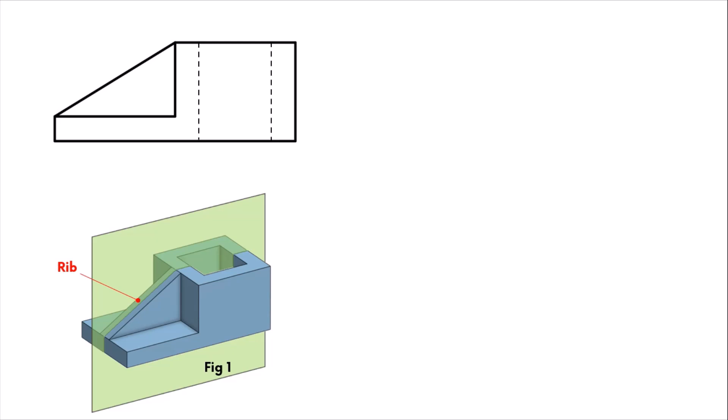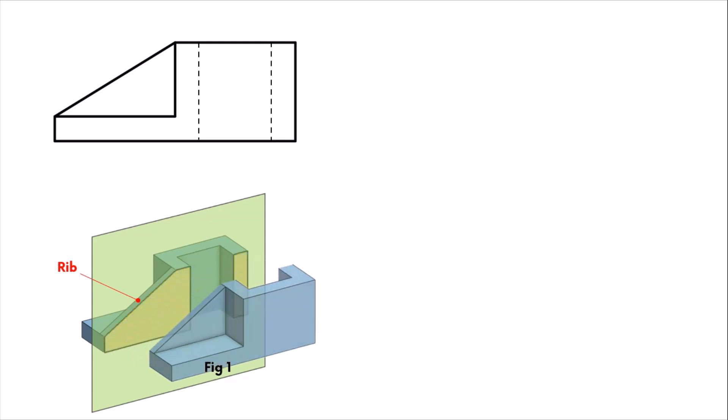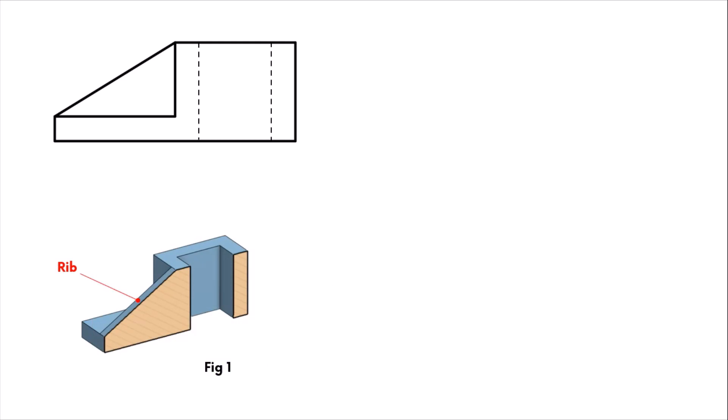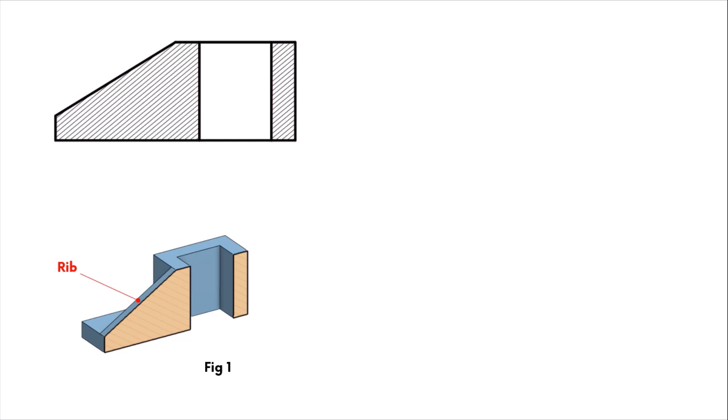We visualize the part being cut by the cutting plane. It can be seen that the cutting plane passes along the length of the rib and divides the part into two halves. Next, we identify the section surfaces in the front view, and a hatch pattern is applied to represent the sectioned area.